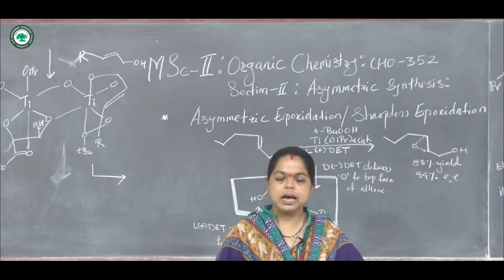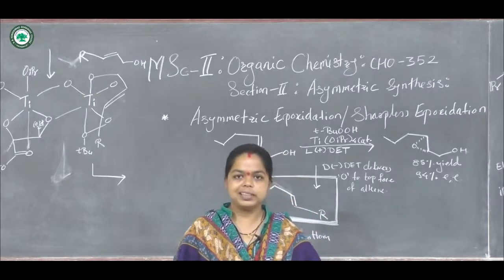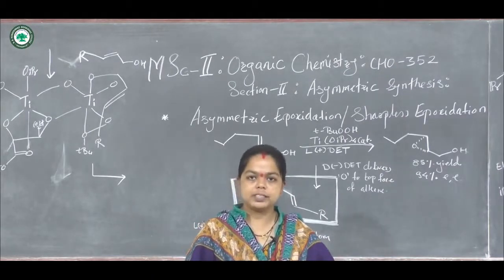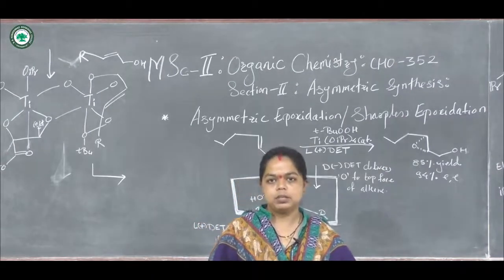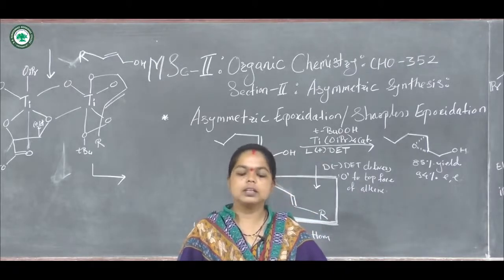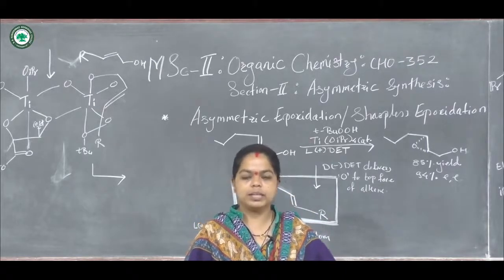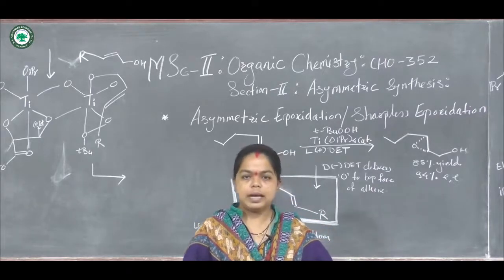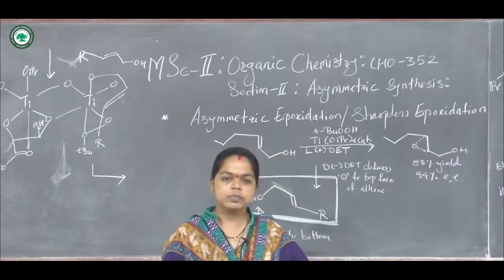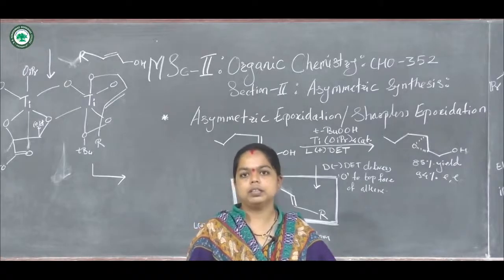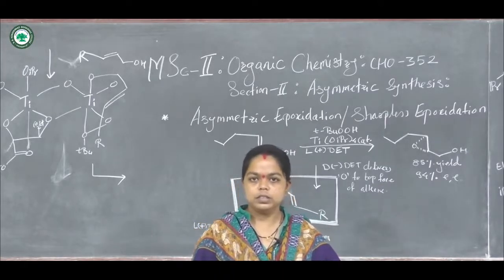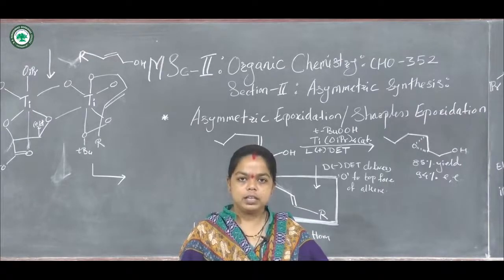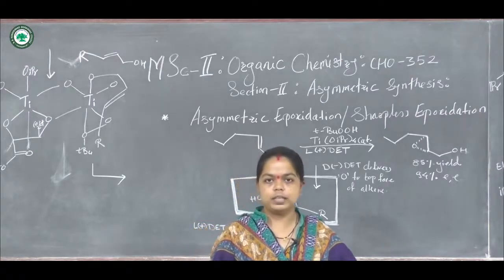In the last lecture, we studied asymmetric hydrogenation using BINAP as the chiral ligands and ruthenium catalysts. The corresponding chiral complex of the ruthenium metal carries out the asymmetric hydrogenation, and hydrogens are delivered on one face of the double bond. Via syn-hydrogenation, we get a high amount of enantiomeric excess.